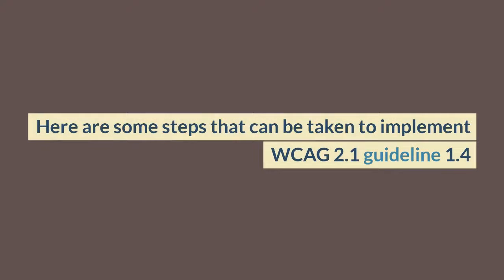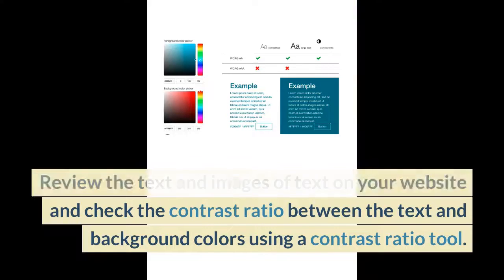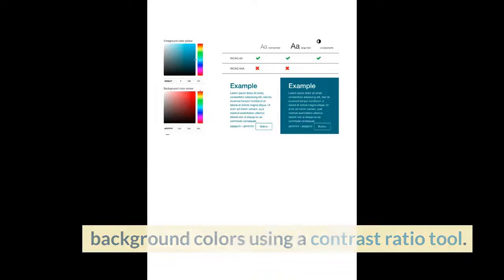Here are some steps that can be taken to implement WCAG 2.1 Guideline 1.4. Review the text and images of text on your website and check the contrast ratio between the text and background colors using a contrast ratio tool.